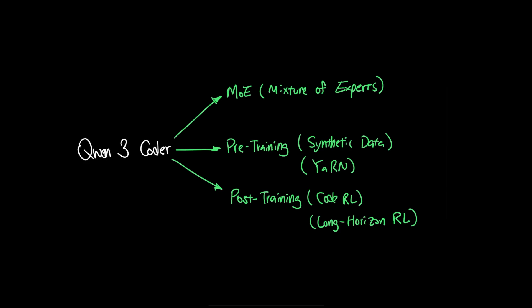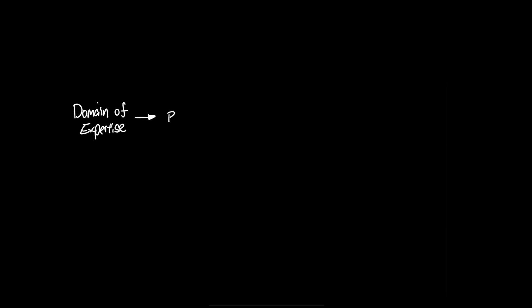Moving on to post-training. Alibaba focused on two main strategies in post-training processes, where they use code reinforcement learning and long horizon reinforcement learning. Since Quen3 Coder is a coding model, it has the advantage of mainly focusing on the domain of coding.